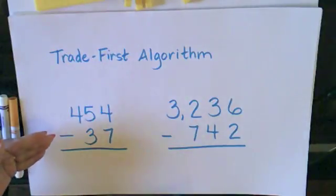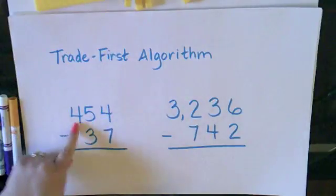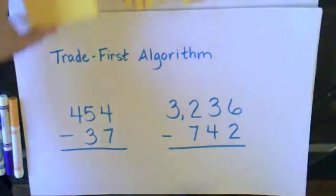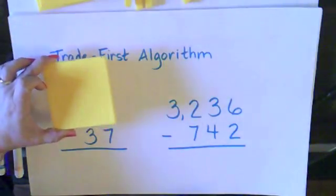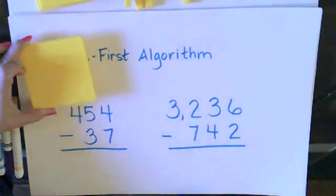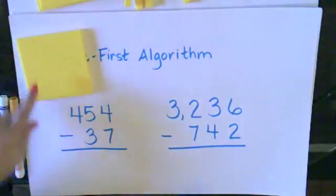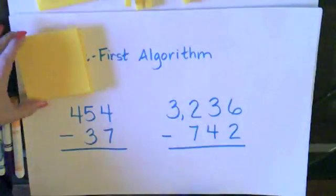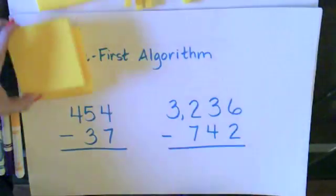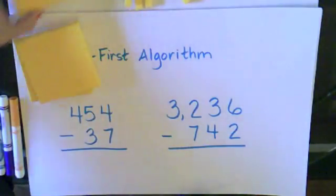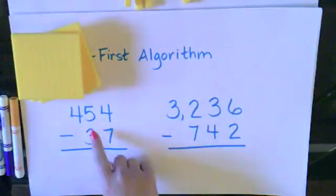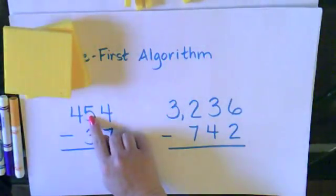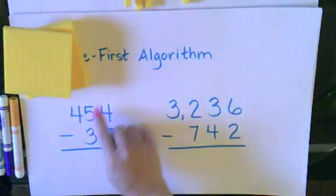First I'm going to build the number 454 with base 10 blocks. So I have my 100 flat. This is 100, 200, 300, 400. And then I need to build 50, so I need 5 10s.